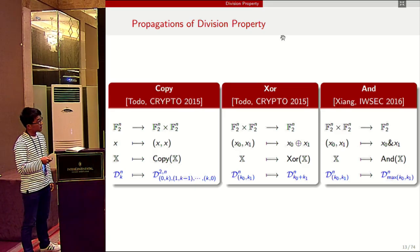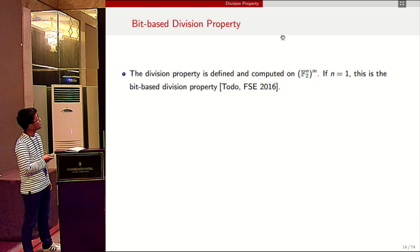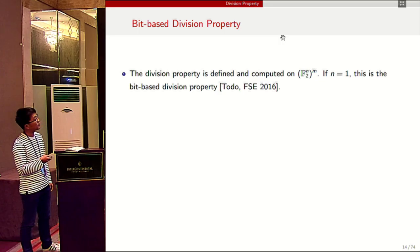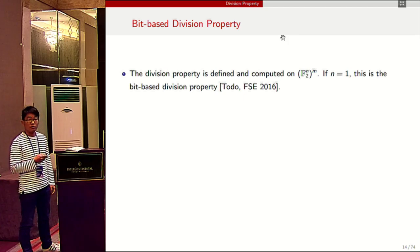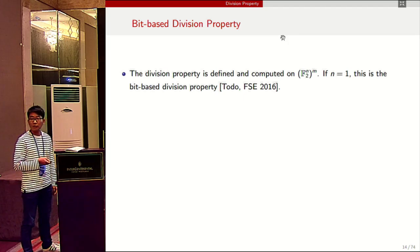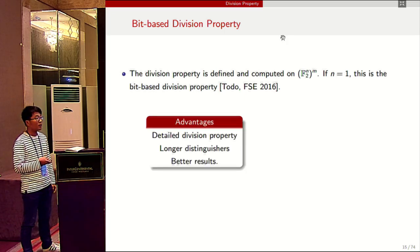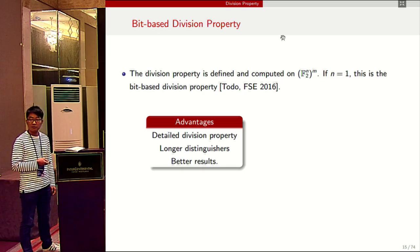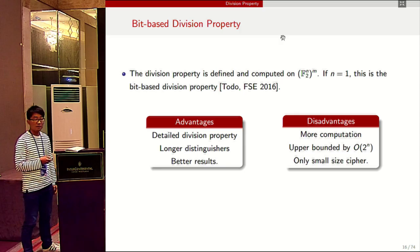For the AND operation, the division property is to find the maximum value of the input division property. Now, division property is defined and computed on F_2^n to the power of F_m. If n equals one, this is the bit-based division property. Bit-based division property treats each bit independently, so it can describe much more detailed division properties and find longer distinguishers and better results. However, bit-based division property requires much more computation.